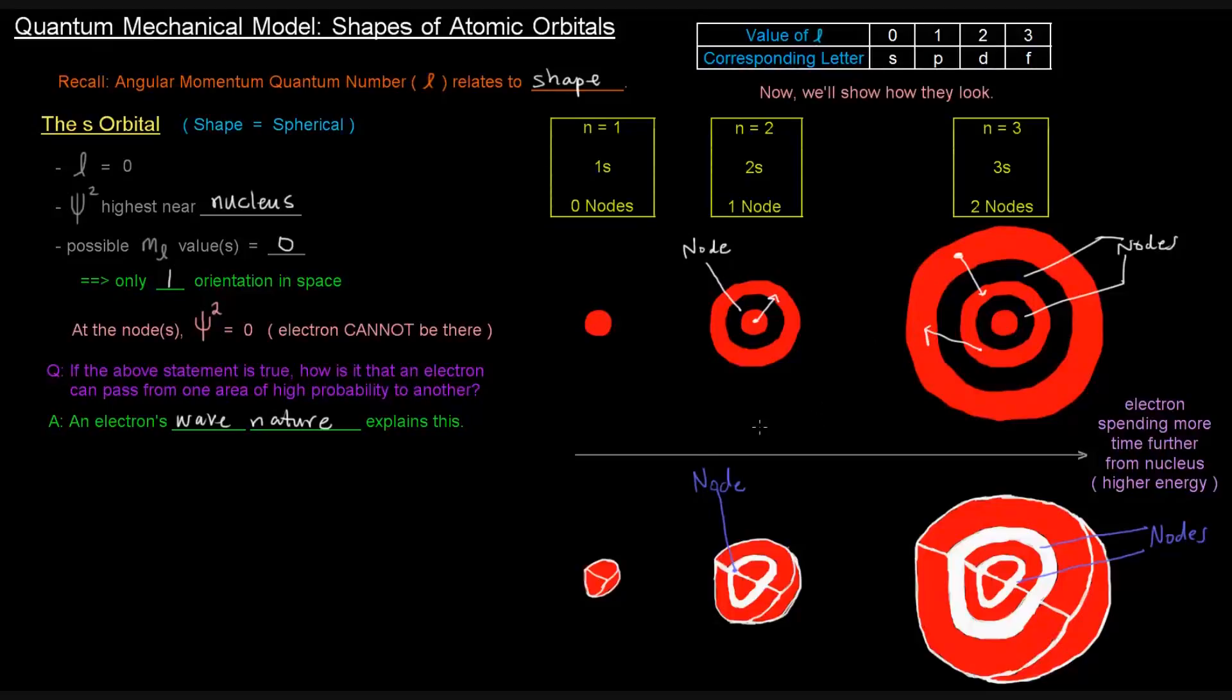One last thing I wanted to mention is that as we go from n equals 1 to n equals 2 and n equals 3, we can see that the electron can be further and further away from the nucleus.